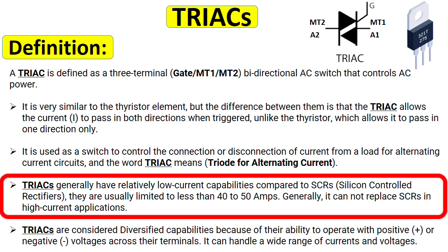TRIACs generally have relatively low current capabilities compared to SCR silicon controlled rectifiers. They are usually limited to less than 40 to 50 amps. Generally, it cannot replace SCR in high current applications.